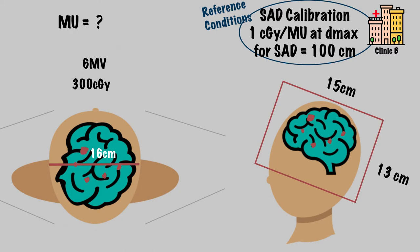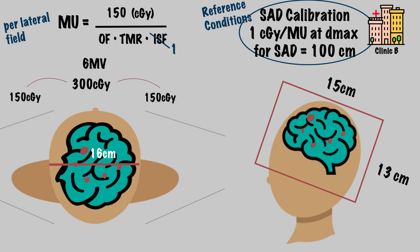Again, first step is to check our reference conditions. For this example, reference and calculation point are the same, at SAD of 100 centimeters, which makes our equation easy since inverse square factor will equal 1. Since we are treating with two beams and an SAD setup, implying the isocenter is in the center of the brain, each beam should deliver half the prescription dose, or 150 centigrade. Now we need to account for the variation from reference conditions for the TMR and output factor.